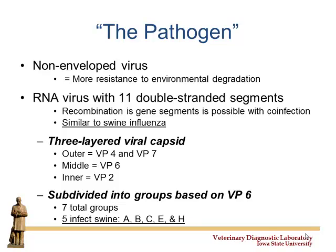Technically, there are seven different groups of VP6, but only five infect swine: A, B, C, D, E, and H. E and H have not been reported, to my knowledge, in the U.S. or North America. We're only dealing with A, B, and C when it comes to production systems here in the U.S.